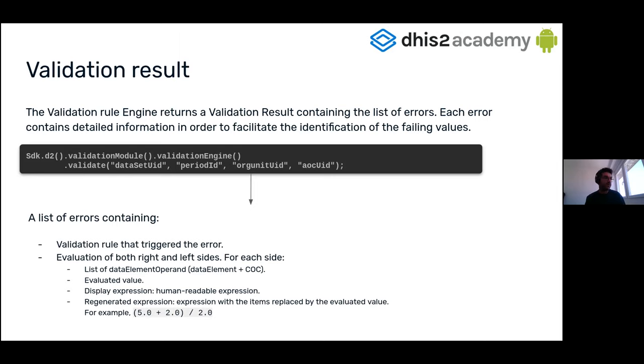And each error contains some information, some context information about the error to make it easy to identify. For example, it includes the validation rule that triggered the error, and then some information about both sides. You know that the validation rule is composed of two sides, the right side and the left side, and an operator. Like you can say that this part should be greater or equal than that part.